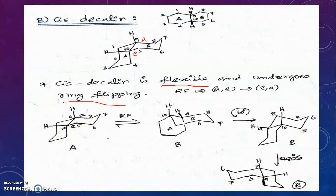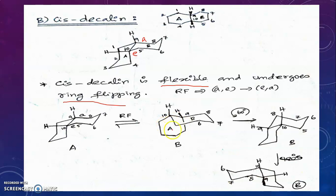Here I have shown the ring flipping of cis-decalin. Taking conformation A with carbons 10, 5, 6, 7, 8, 9 — when ring flipping occurs, both rings flip. Carbon 7 comes down and carbon 10 goes up. Drawing this ring also in chair form — though it is very difficult to draw the chair conformation of this ring on paper, I am showing the structure like this. This ring is also in chair form, not a corner ring.